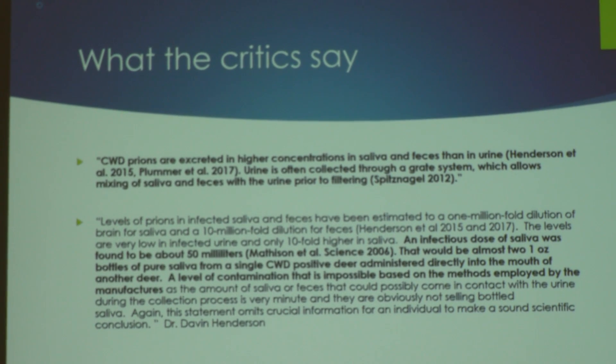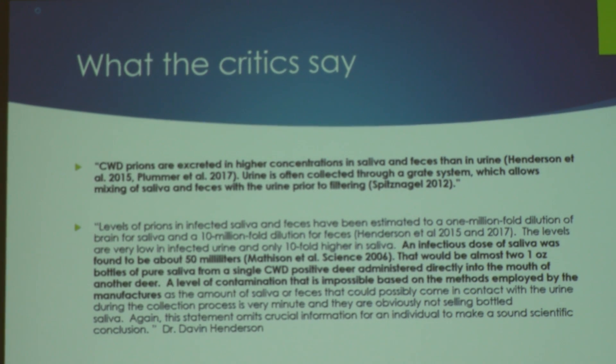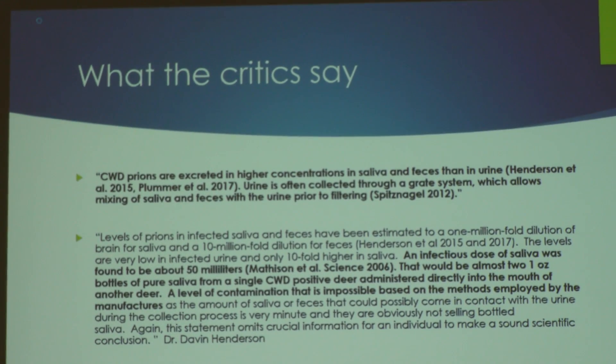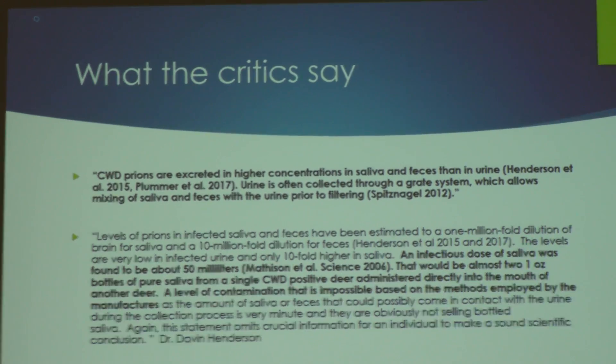It takes about 30 to 50 milliliters of saliva — roughly one bottle — and that entire bottle of deer urine product would have to be pure saliva, which would then have to be inoculated into the mouth of one specific deer to be near an infectious dose. That level of contamination of these products is just not possible given the way the samples and urine are collected.